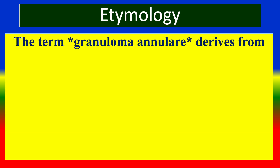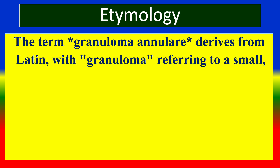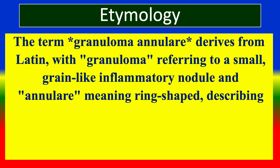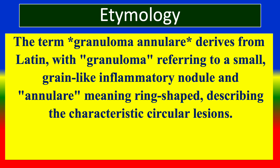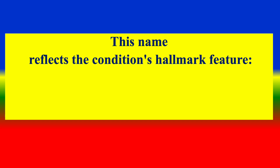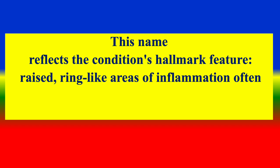The term Granuloma annulare is derived from Latin, with 'granuloma' referring to small grain-like inflammatory nodules, and 'annulare' meaning ring-shaped, describing the characteristic circular lesions. This name reflects the condition's hallmark feature: raised ring-like areas of inflammation often seen on the skin.